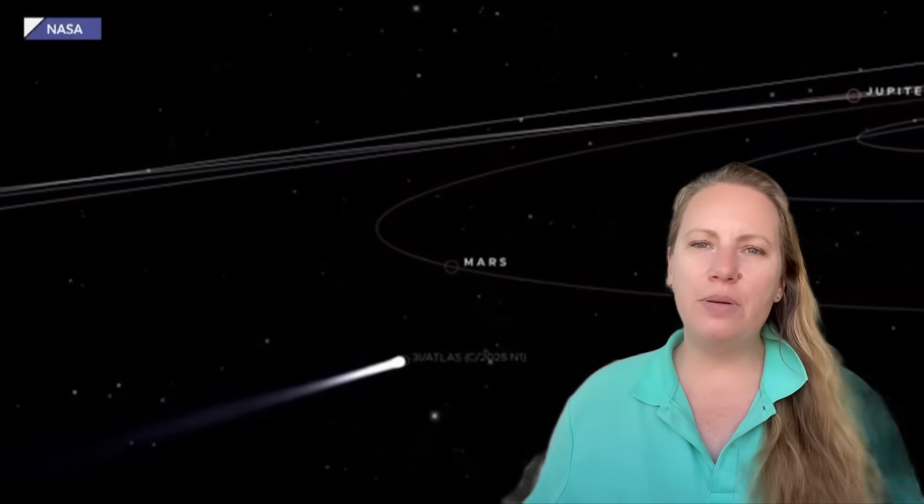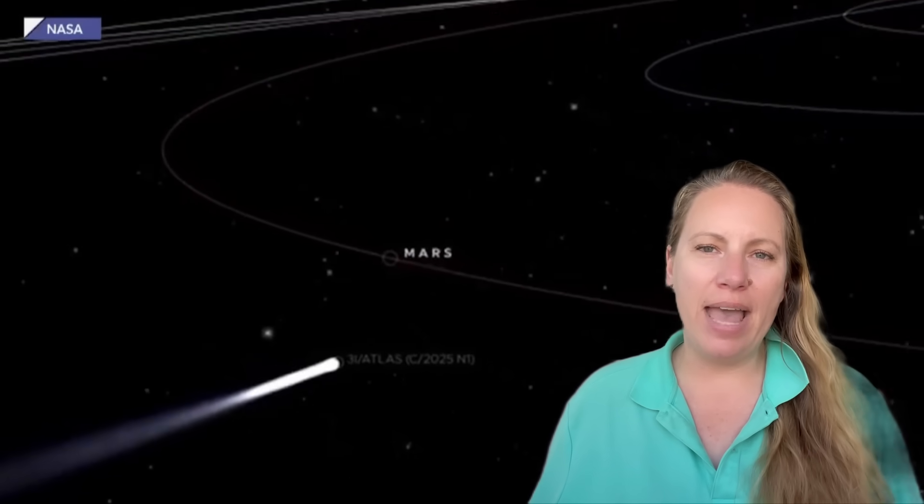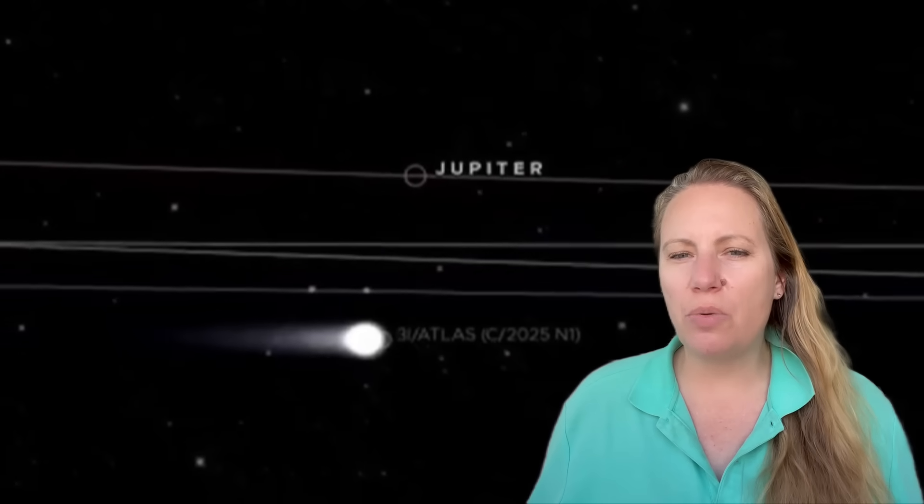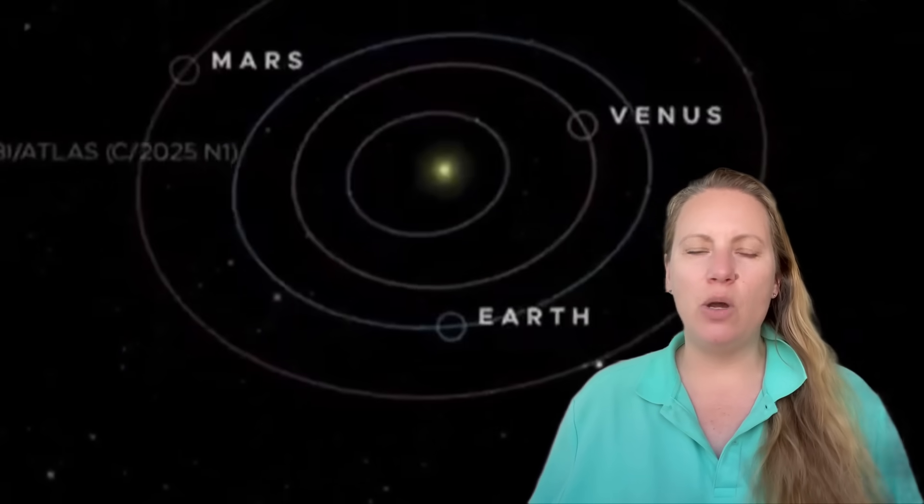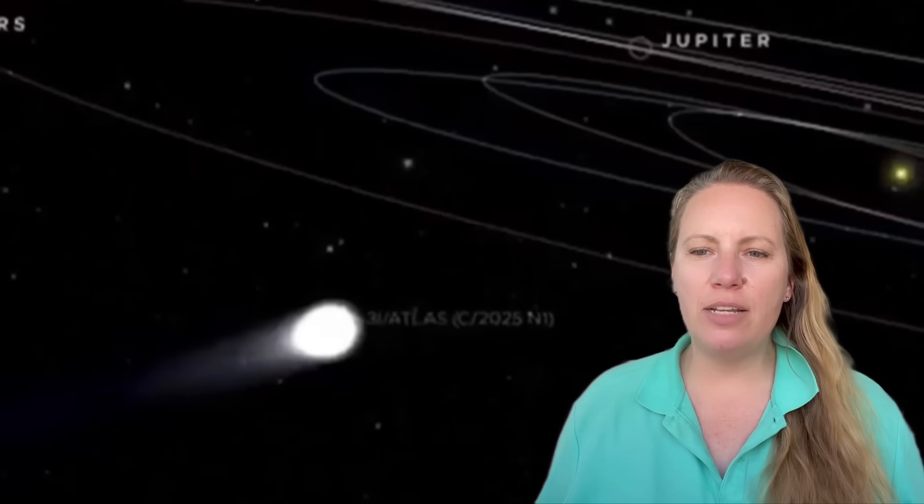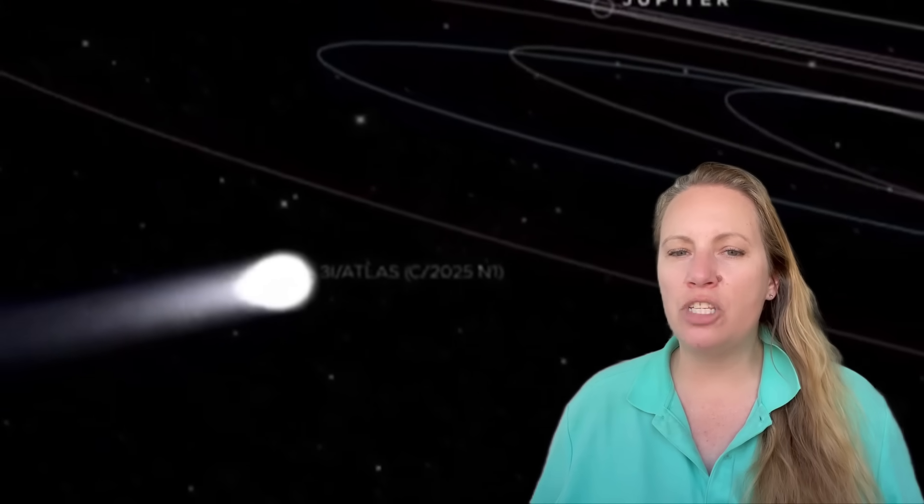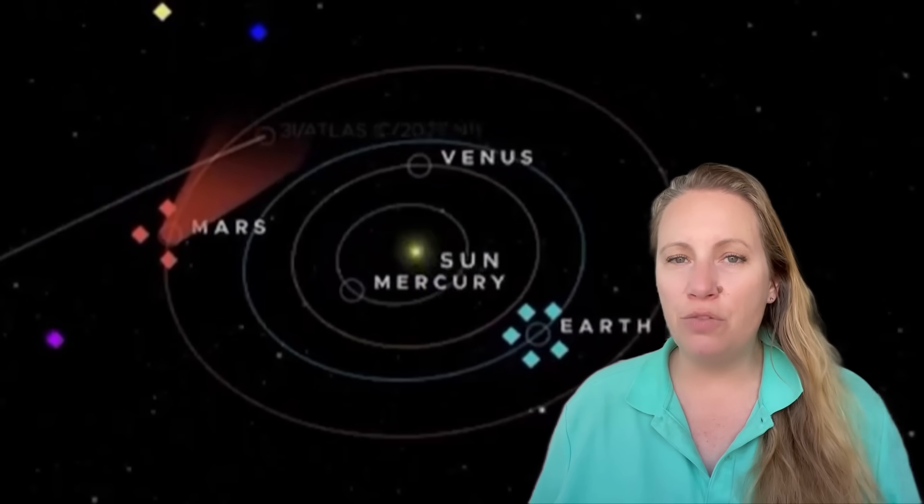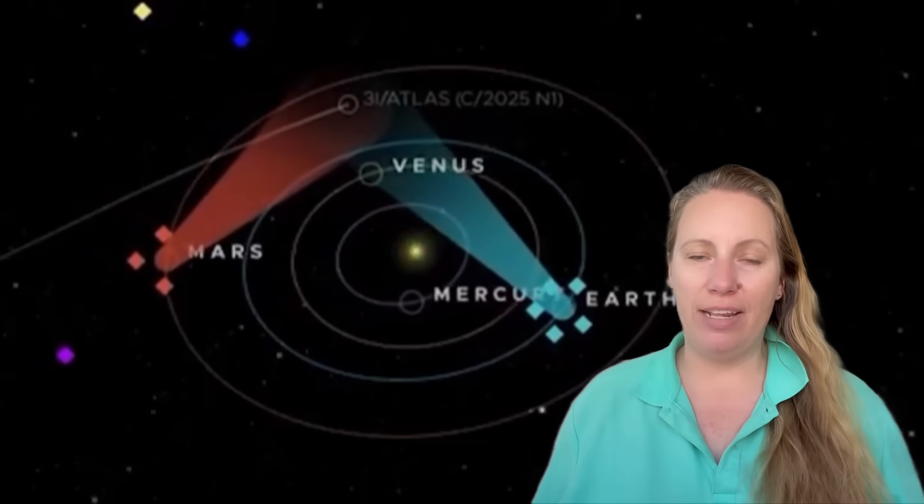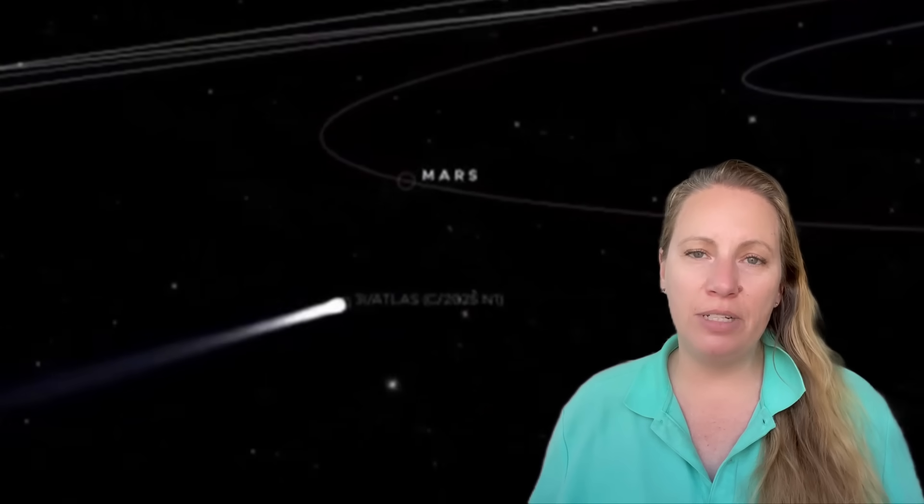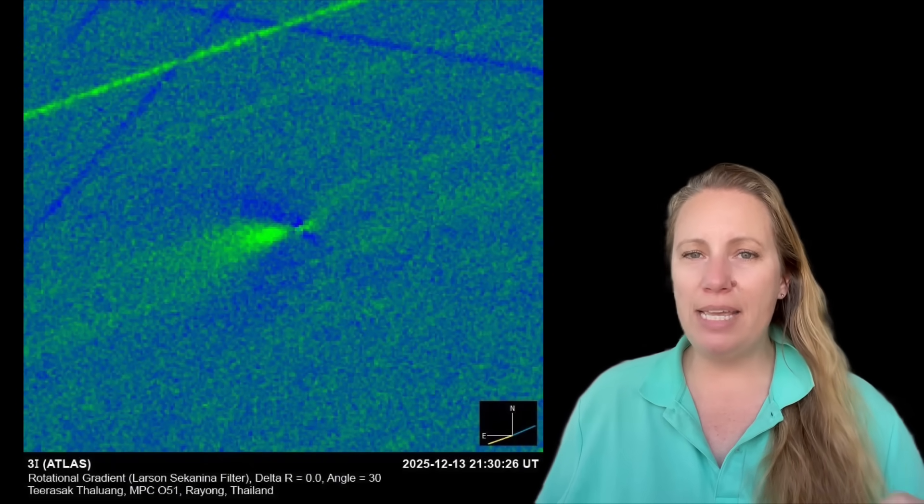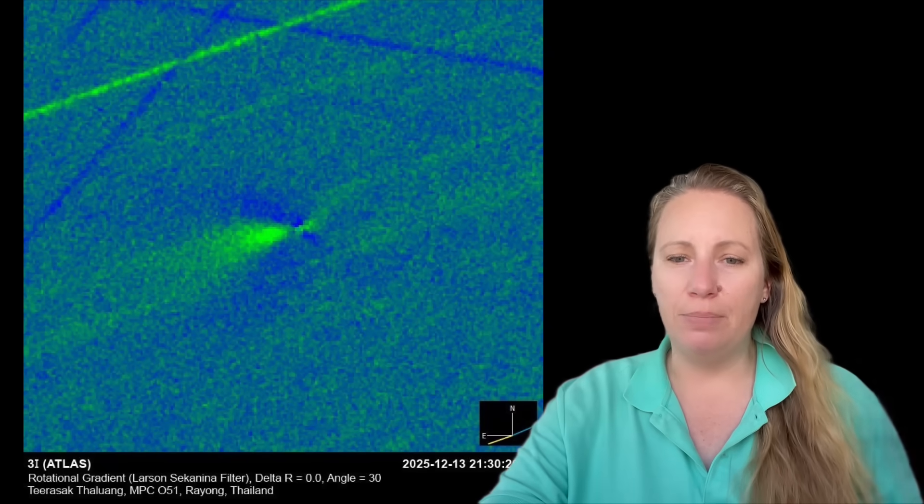So where do these claims come from and what is still the mystery and what is new with 3i Atlas? The claims come from a misunderstanding of how comet images work and how the viewing angles in space can completely fool the eye in both directions. Sometimes an anti-tail is an optical illusion, but it is not here with 3i Atlas. So let me explain this carefully and simply.